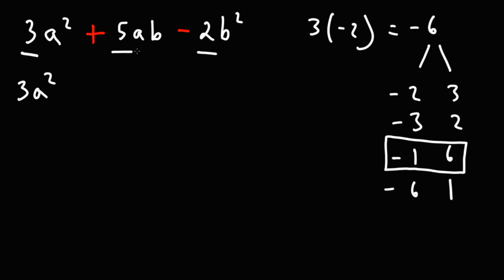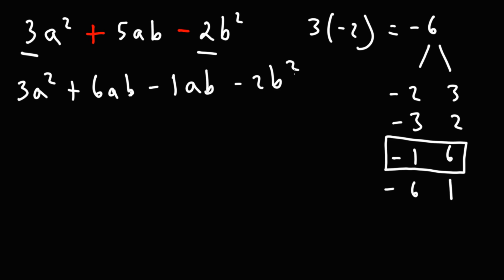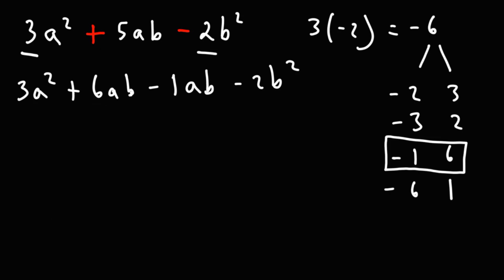So I'm going to replace 5 with negative 1 and 6. Instead of writing 5ab, I'm going to write 6ab minus 1ab, because 6 minus 1 is 5, so the value remains the same. You could also write it in reverse order as negative 1ab plus 6ab — the order doesn't matter. I put the 6 first because 3 easily goes into 6.